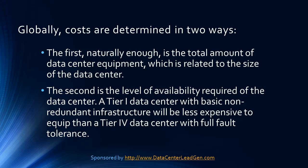Globally, costs are determined in two ways. The first, naturally enough, is the total amount of data center equipment, which is related to the size of the data center. The second is the level of availability required of the data center. A Tier 1 data center with basic non-redundant infrastructure will be less expensive to equip than a Tier 4 data center with full fault tolerance.